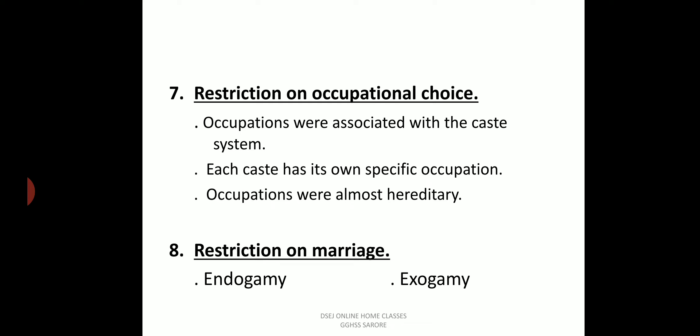Honor killing is also associated with inter-caste marriages today, showing that they still don't have full societal approval. In earlier times, violation of the rule of endogamy was strictly dealt with. Endogamy was essentially the lifeblood of the caste system.